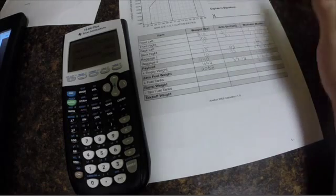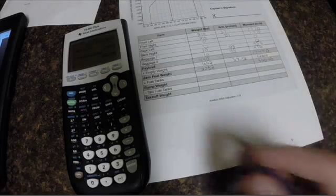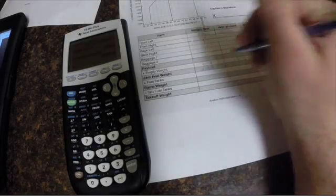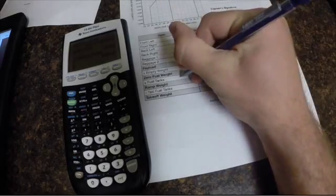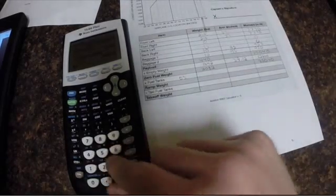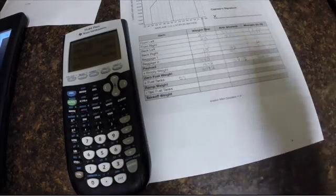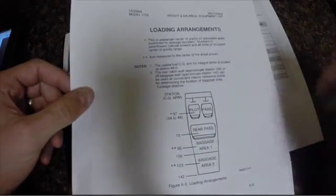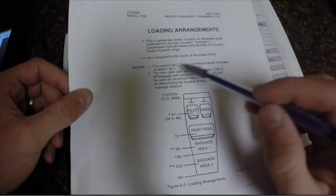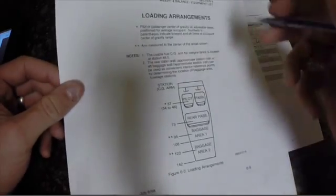All right, so this is your zero fuel weight of the airplane with you and your passengers and baggage without any fuel in it. But as you know, you need fuel and our specific plane has a capacity of 56 gallons, but only 53 is usable. So we're going to put 53, and the fuel is at a CG location of 48, so the arm is 48.